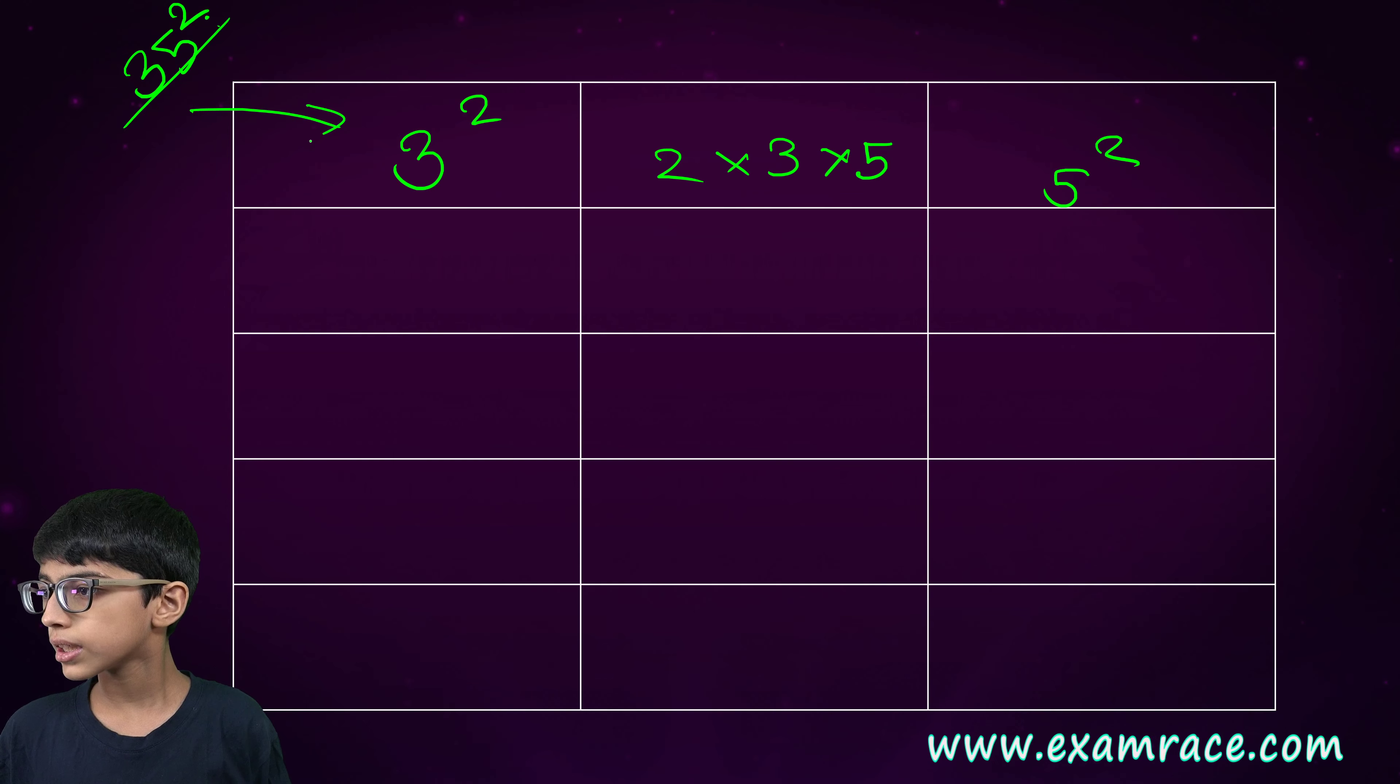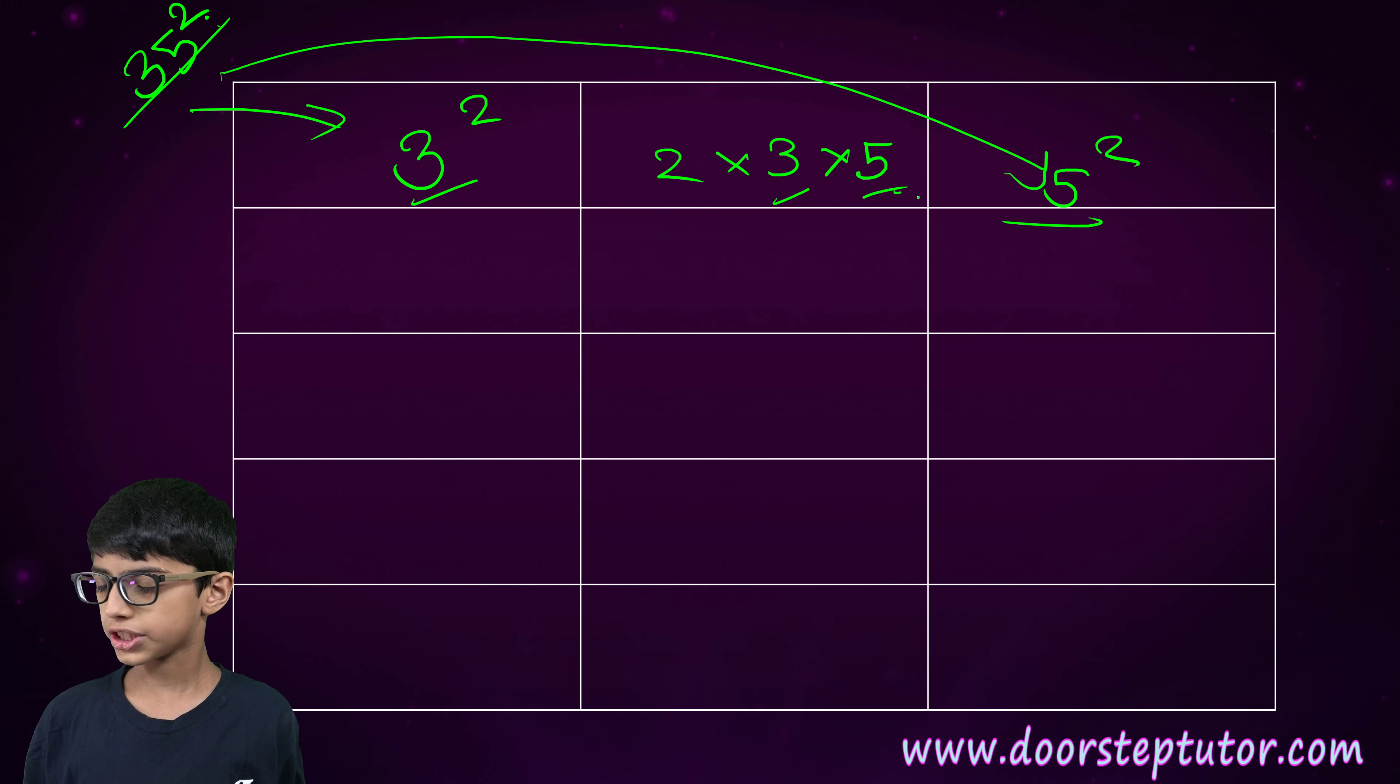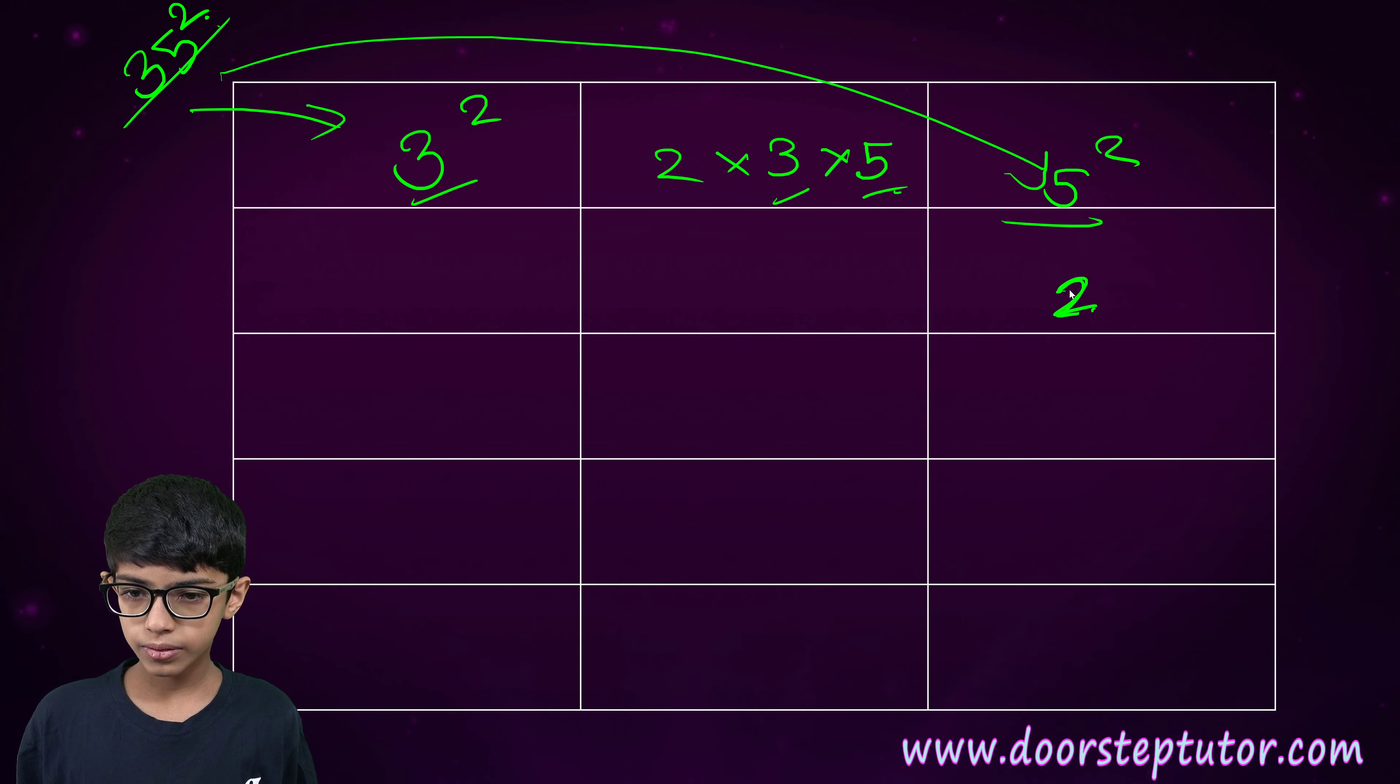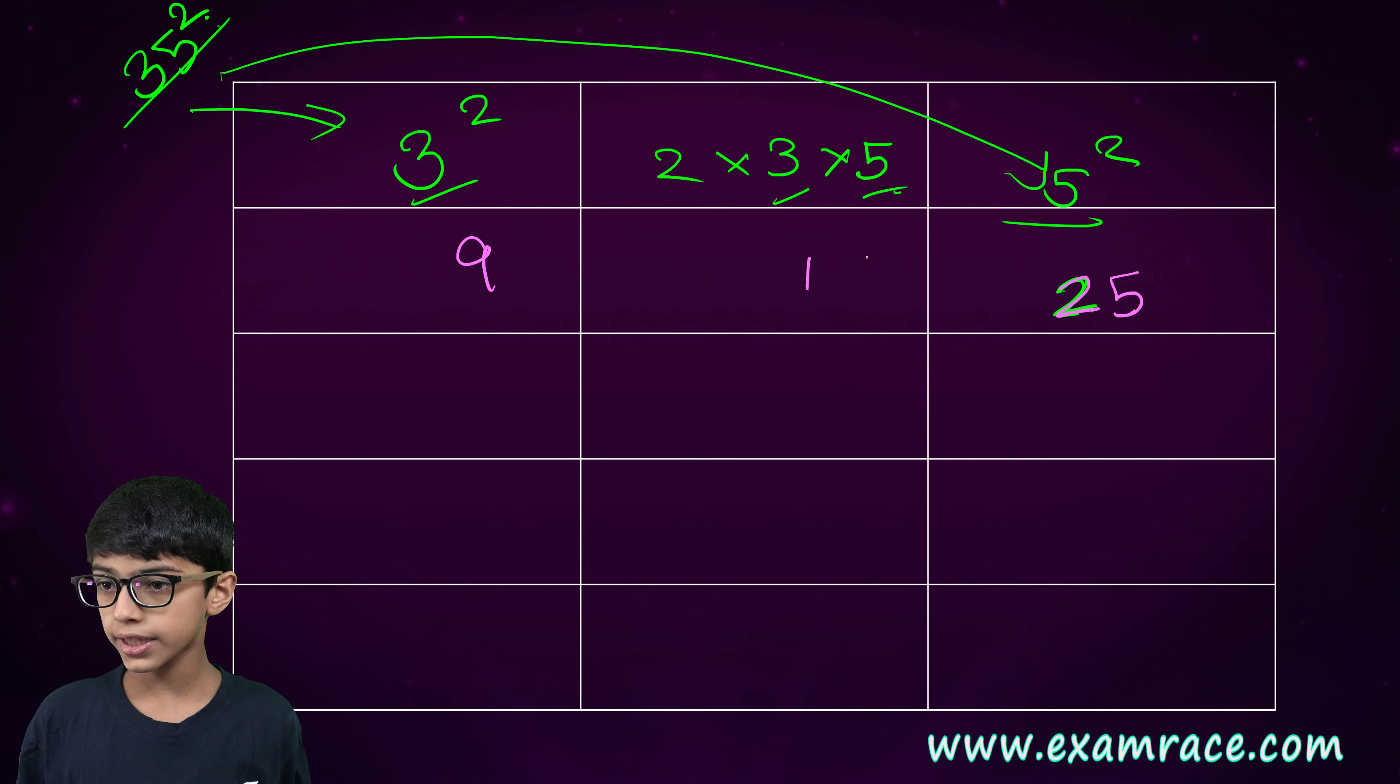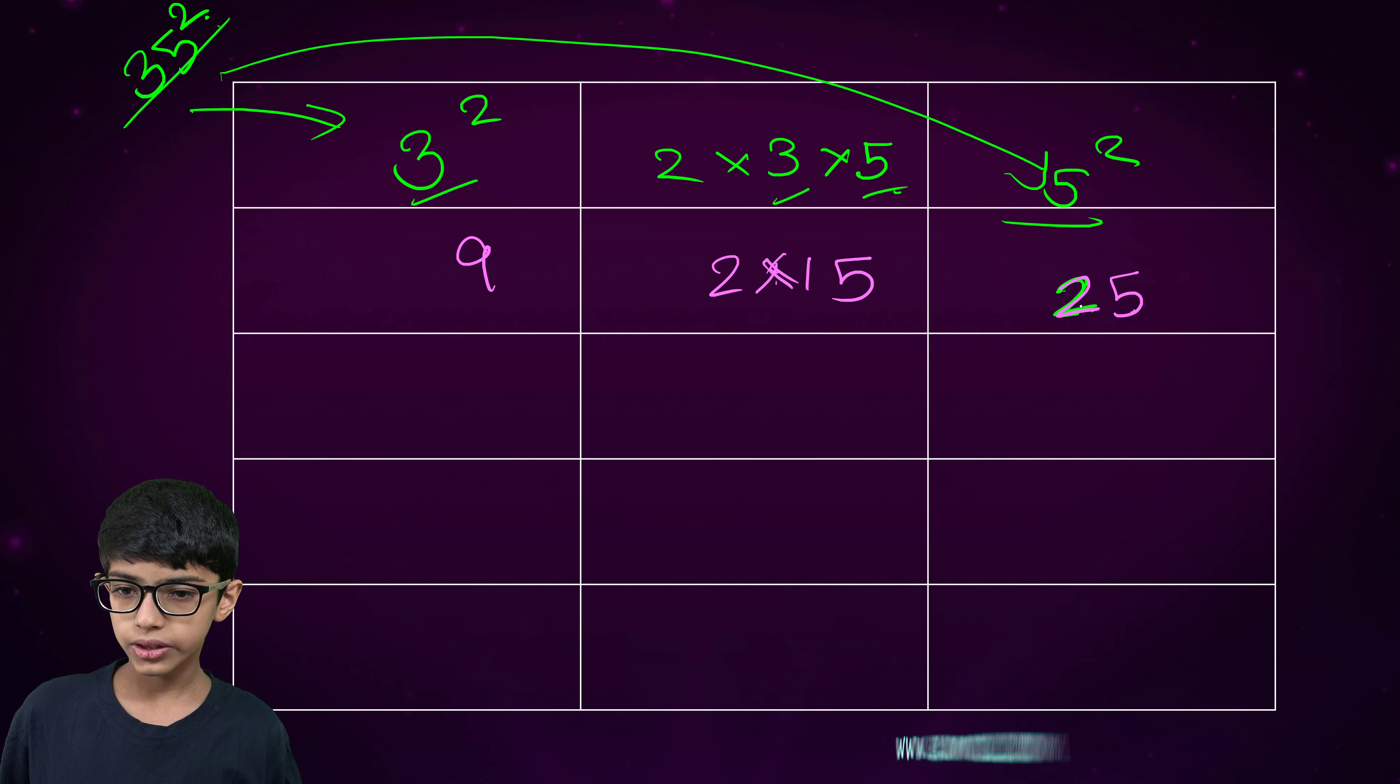Three will come here. This five will come here. Ten's digit. And one's digit. Now, five square will be twenty-five. Then, three square would be nine. And three into five would be fifteen. And we will multiply this by two.